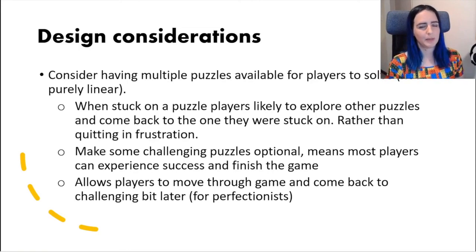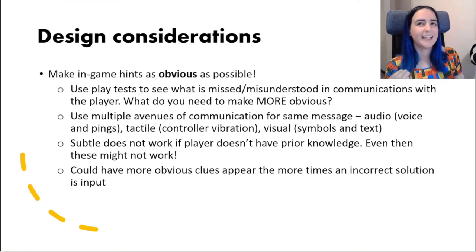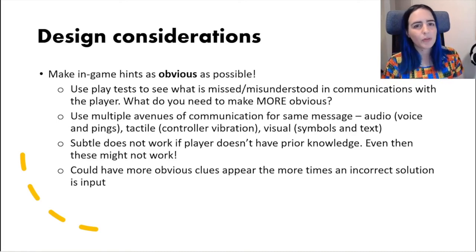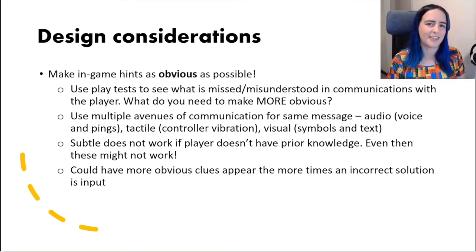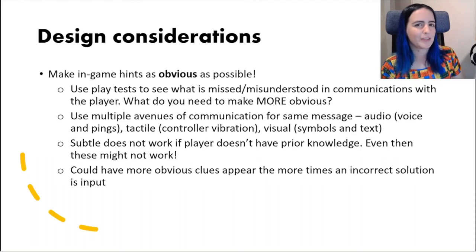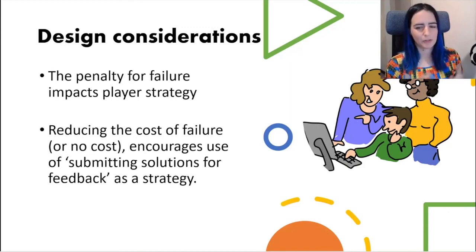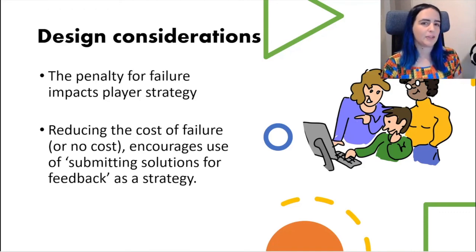This allowed more players to finish the game and experience a satisfying feeling of completion. If players are having trouble with your puzzles, make your in-game hints more obvious — subtle hints sometimes just do not get through to the player. Use more avenues of communication: add audio pings, add more visual flashes, play test those additions and see if players now get the clue. Or you could have it so that after a certain number of incorrect solutions submitted, more hints start appearing. The penalty for failure within puzzle games will impact what strategies players use — The Witness had pretty much no penalty for failure, so players were encouraged to experiment and submit incorrect solutions to get feedback. With a penalty for failure, that strategy would not be viable.